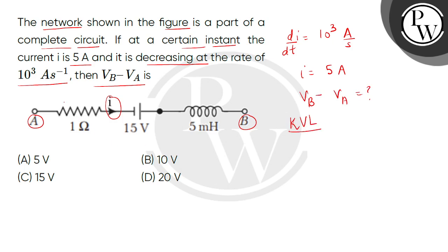First, we have current passing from 1 ohm. So we can take the potential of point A to Va and the potential of point B to Vb, and moving from point A to point B.